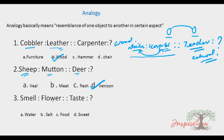Question number 3: Smell, colon, Flower, double colon, Taste, colon, question mark. The options are: Water, Salt, Food, Sweet. The relationship is smell relates to flower. This is a word-based analogy.